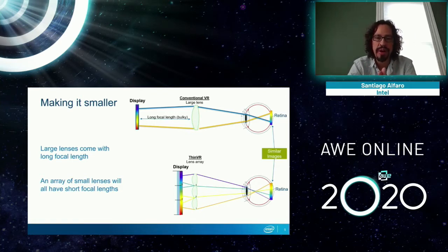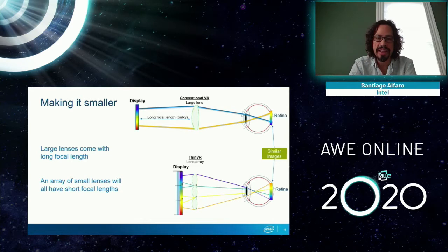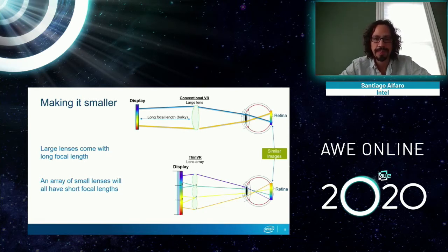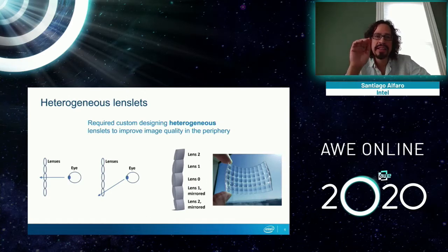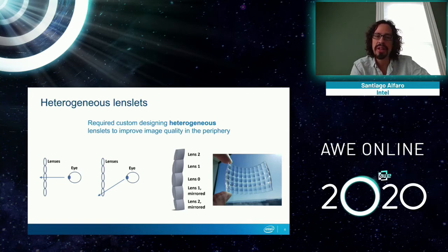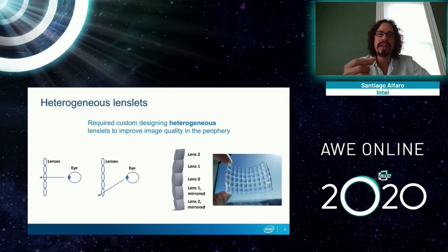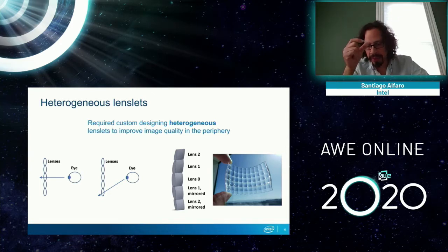Our approach — which is something that has been tried before — is: why don't we use a lot of small lenses? Each one of those lenses is going to have a small focal length, and then we deal with whatever comes later. So we created an array of smaller lenses and reduced the focal length. Now, lenses are made to be seen through their central axis. So if we just take one lens and repeat it up and down, by the time you get to the extreme lenses, you're looking through a much different angle, causing distortion. Our first task was to create a column of lenses where every single lens is different and optimized for that specific angle of incidence — resulting in a heterogeneous lens array.